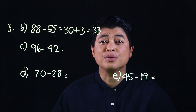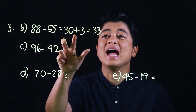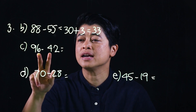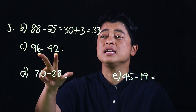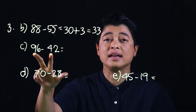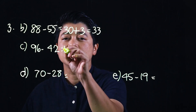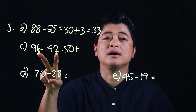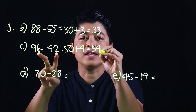Since there's no regrouping needed with the ones, we add the difference. Similarly, 6 minus 4 does not need regrouping, so we start by subtracting the tens: 90 minus 40 is 50, and we add 6 minus 2 is 4, giving us 54.